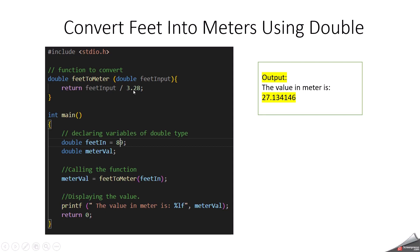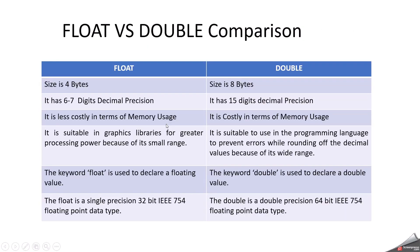When do we need to use double? Here I have written a short C code to demonstrate. I am converting feet into meters, and I used the double data type because the resulting value is large. I declared a feet input of 89 and a double variable called meter_value. I call a function feet_to_meter, passing the feet input. To convert feet to meters we divide by 3.28. When dividing and storing in double, the output is 27.134146. This is why we need to use the double data type.